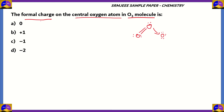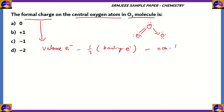The formal charge equals the number of valence electrons of the atom, minus half the number of bonding electrons, minus the number of non-bonding electrons. The central atom is oxygen, which always has six valence electrons, since oxygen has eight electrons total: two in the K shell and six in the outer L shell.